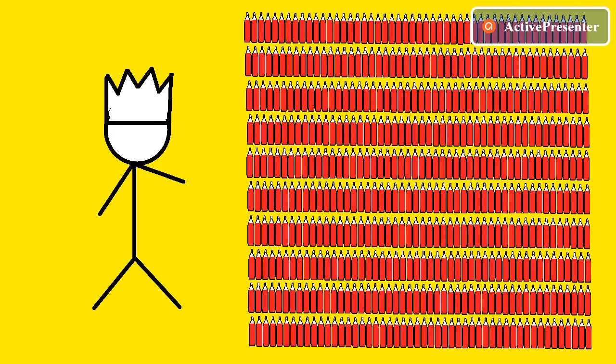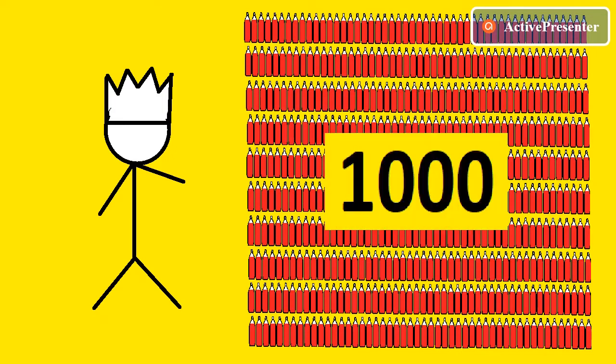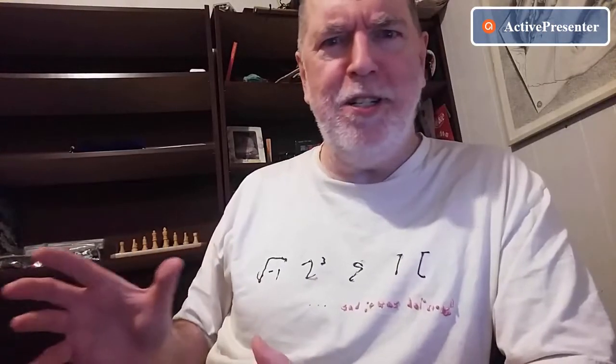The poisoned wine bottle puzzle goes like this. Our hero is King Bob, and King Bob is very proud of all the wine that he has in his wine cellar. There are a thousand bottles which he has been saving for King Bob Day, which is tomorrow.